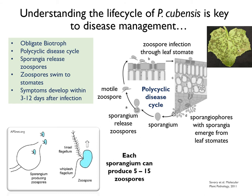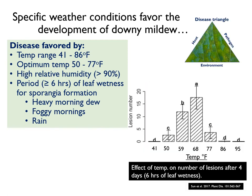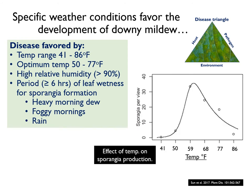This is why oomycetes are often referred to as water molds, since water plays a critical role in their life cycle. P. cubensis requires conditions of high relative humidity, with 6 hours of leaf wetness ideal for leaf infection. Air temperature between 50 to 77 degrees Fahrenheit is optimal for successful infection, with symptoms developing 3 to 12 days after infection. The same temperature range also favors subsequent sporangia production.